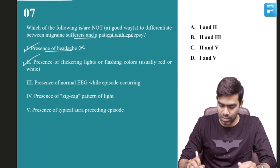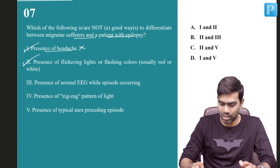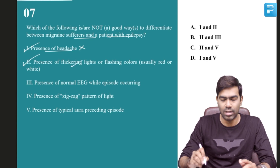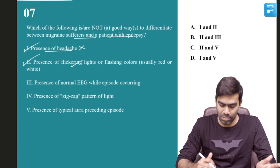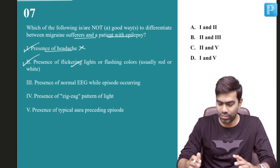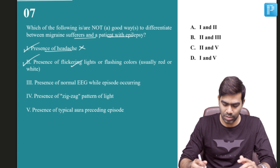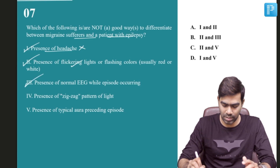Statement 2 mentions that presence of flickering lights and flashing colors, usually red or white, will be able to differentiate between migraine and epilepsy, and that is correct. Statement 2 is more in favor of a diagnosis of migraine than epilepsy, so statement 2 can differentiate between migraine and epilepsy.